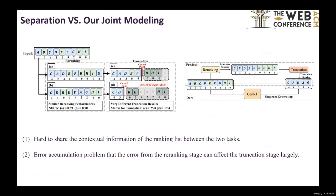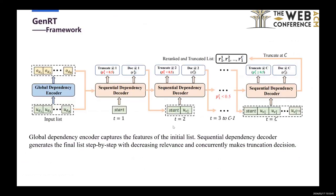First, it is hard to share the contextual information of the ranking list between the two tasks. Second, the separate pipeline usually meets the error accumulation problem, where the small error from the reranking stage can largely affect the truncation stage. To solve these problems, we propose a reranking truncation joint model, Genet, that can perform the two tasks concurrently.